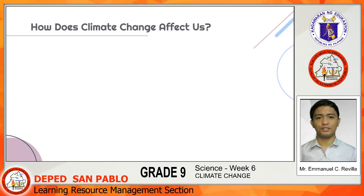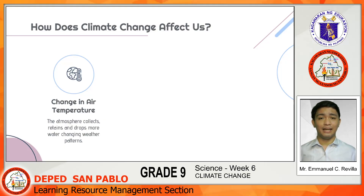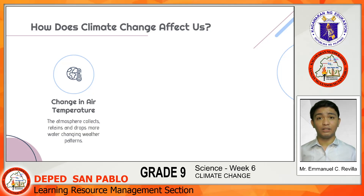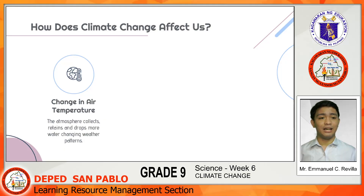How does climate change affect us? Change in air temperature — the temperature of the Earth has increased over the past century and is expected to rise over the next hundred years. Due to this, the atmosphere collects, retains, and drops more water, changing weather patterns and making wet areas even wetter and dry areas even drier. This also worsens and increases the frequency of many types of disasters like storms, floods, heat waves, and droughts.